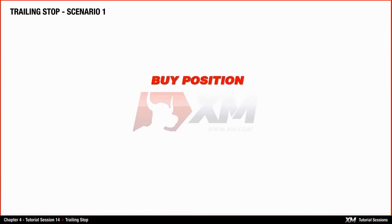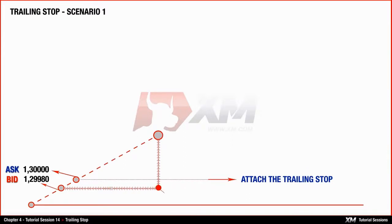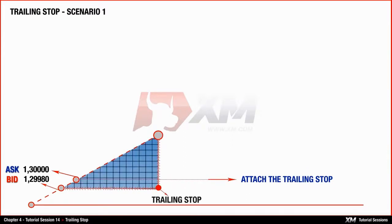Now let's see how this works on a buy position. The trailing stop must be set at least at stop limit level distance from the price. It's important to know that just like stop loss or take profit, the trailing stop must be set at the current price and not at the open price of the order. Therefore, it should be attached to the order while your position is making a profit, or at least breaking even.